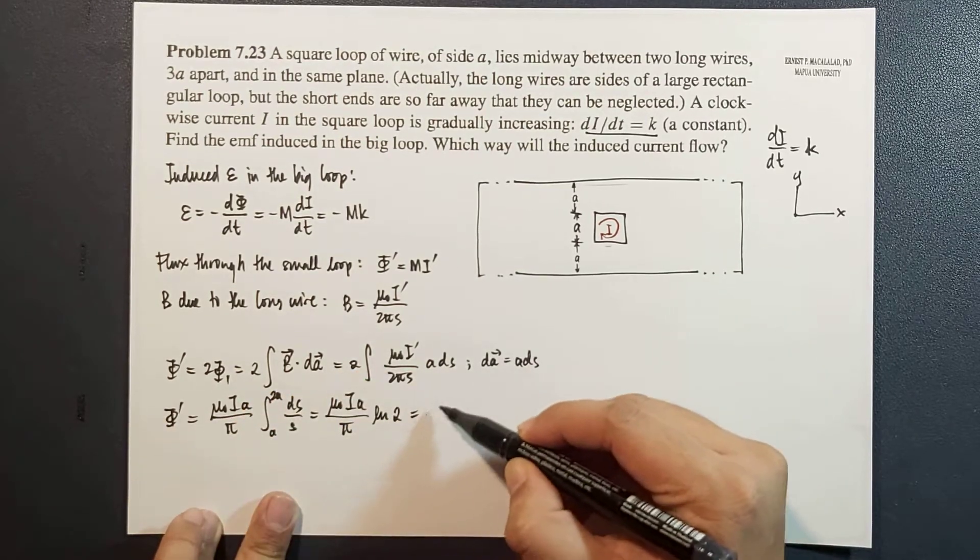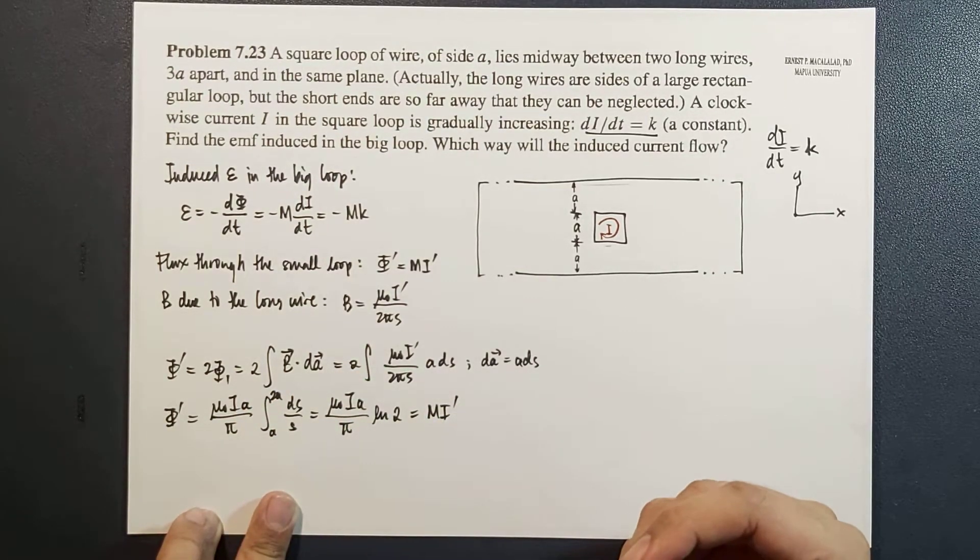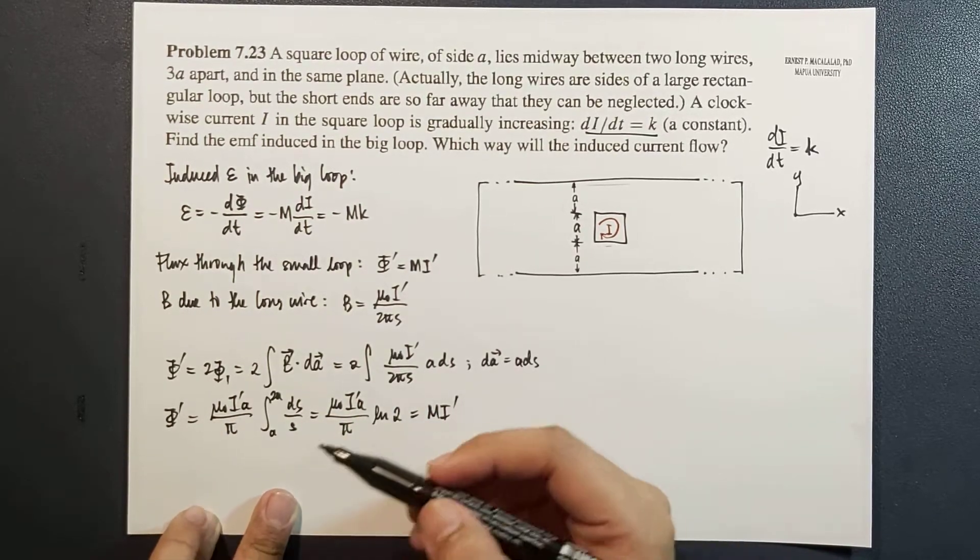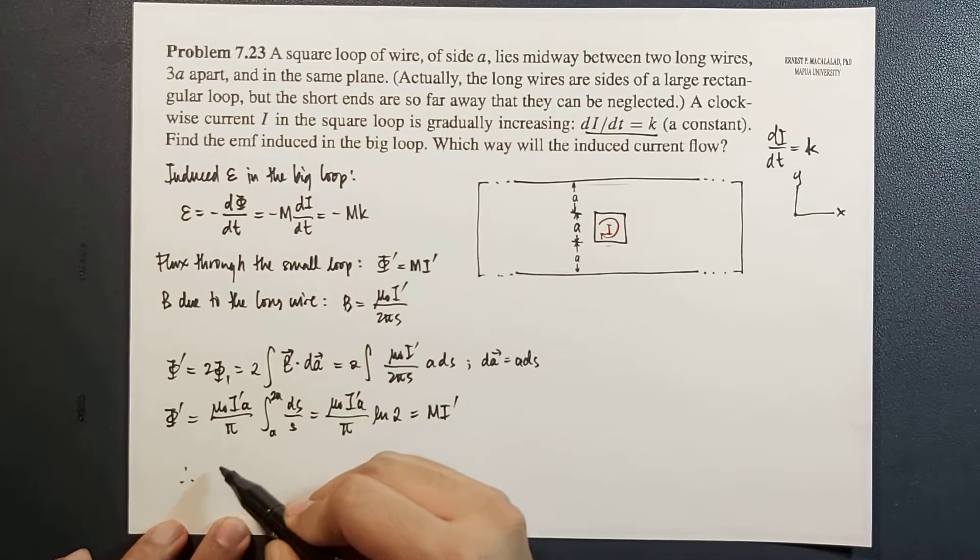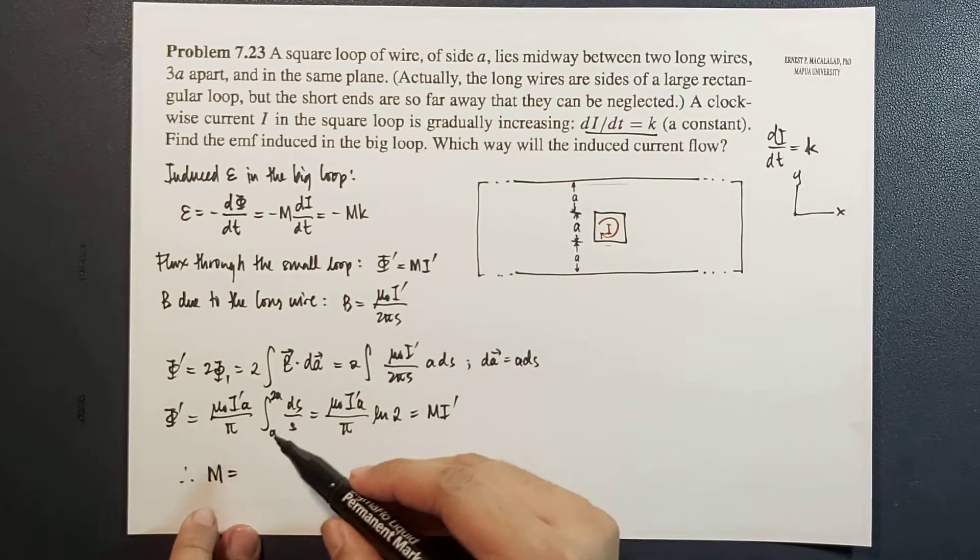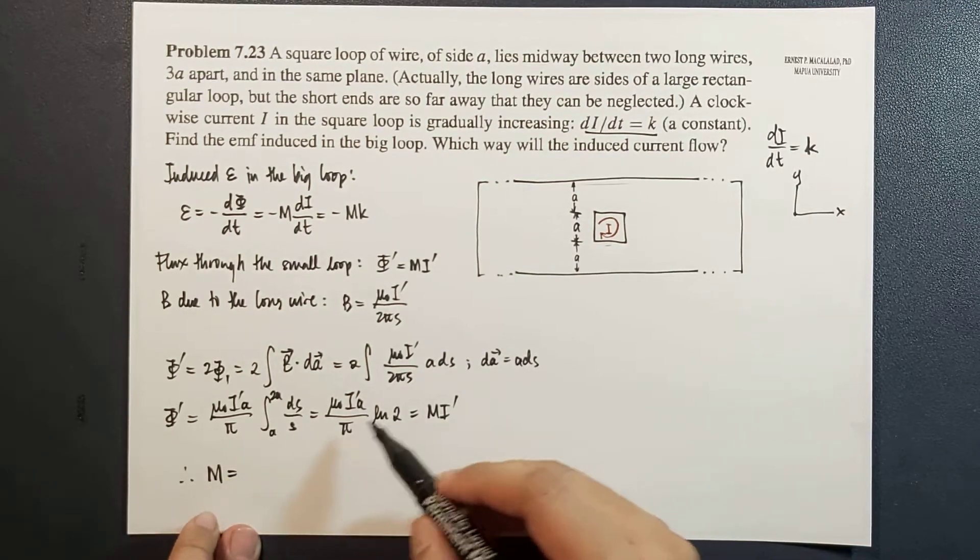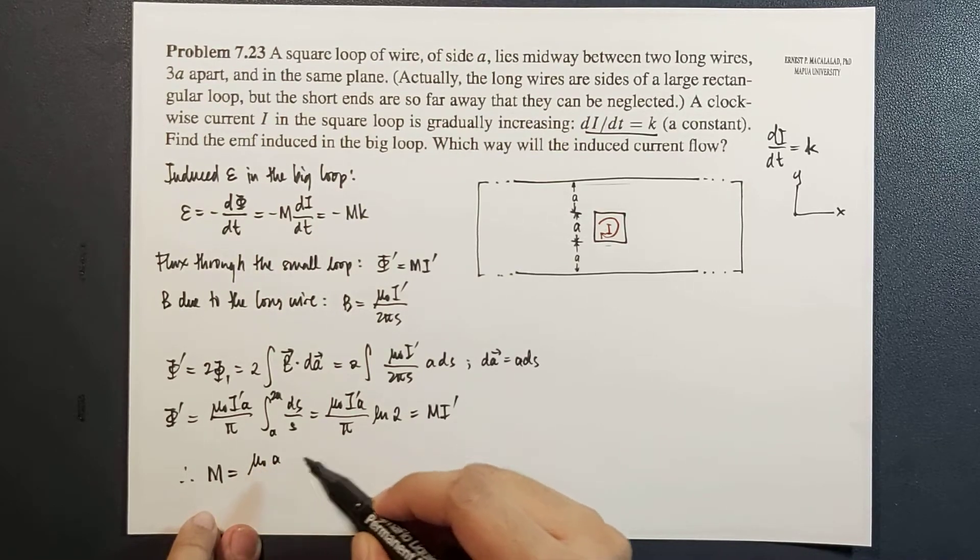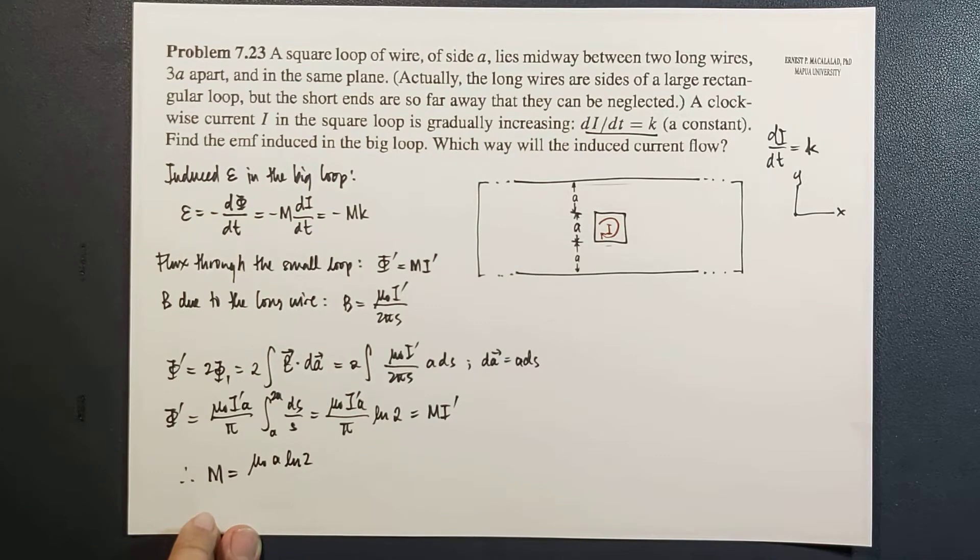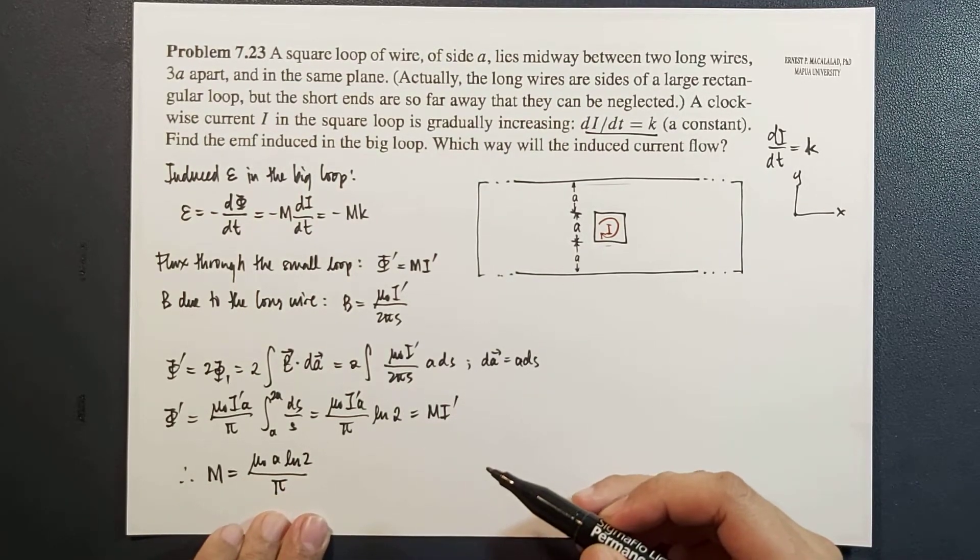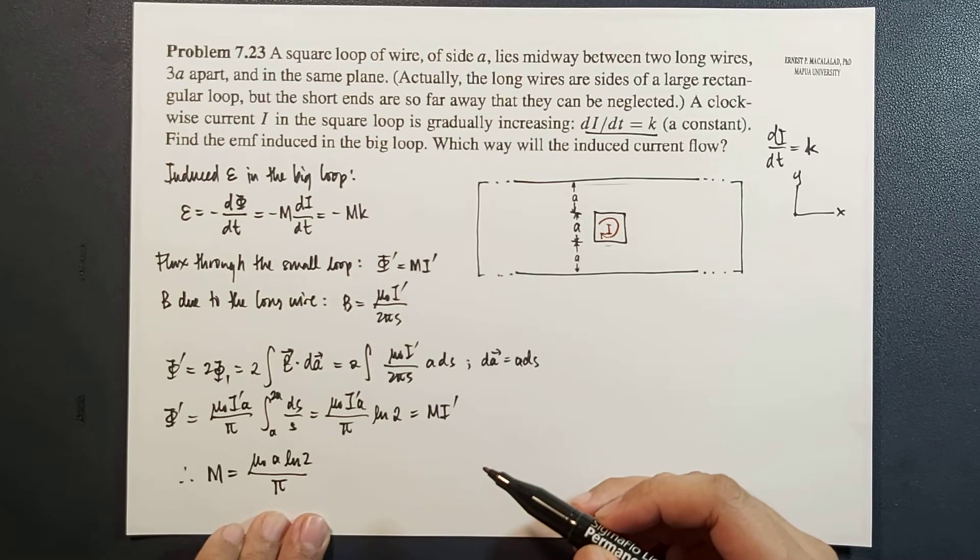And this is equal to M I prime. So therefore, the mutual inductance is equal to mu naught A ln 2 divided by pi.